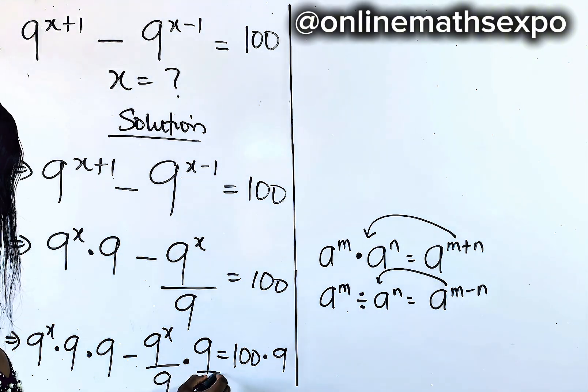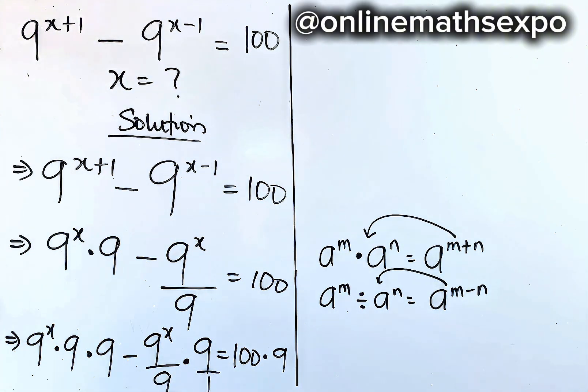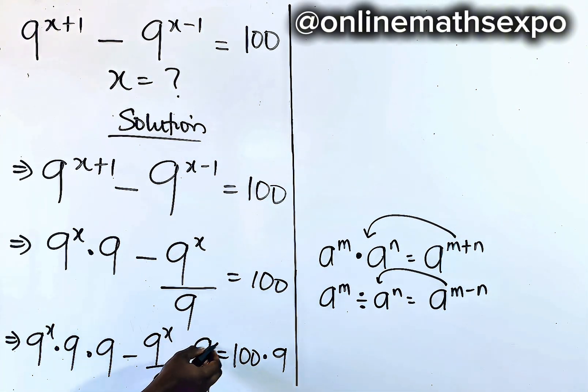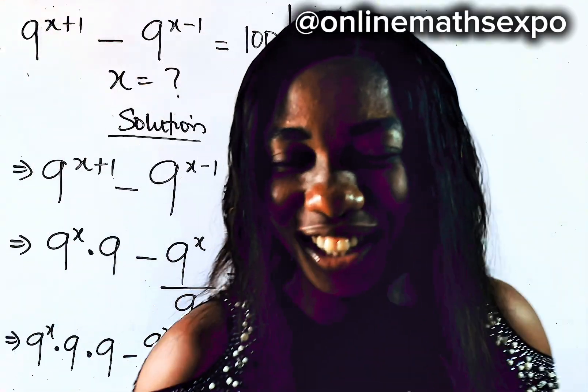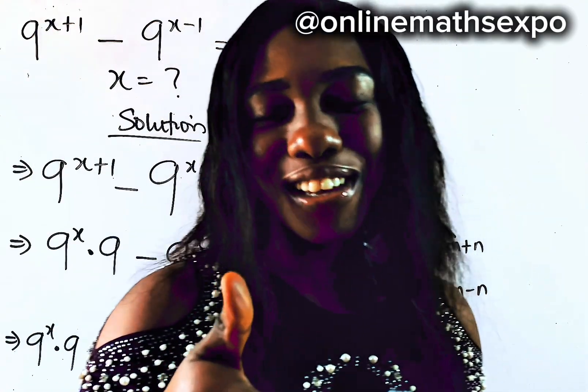Remember, this is 9 over 1, so we are free to take these two off. Let's keep simplifying.